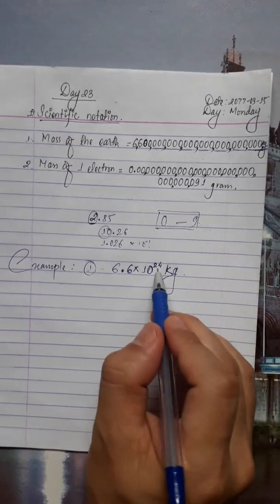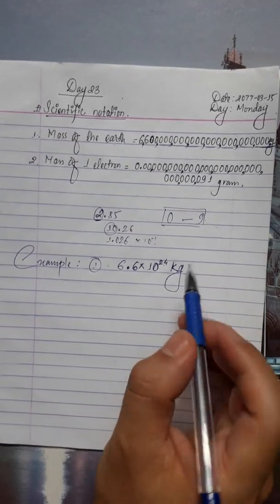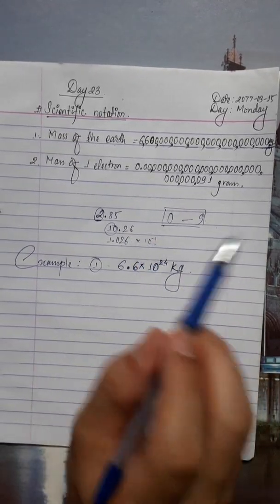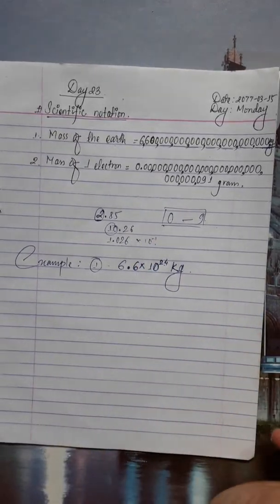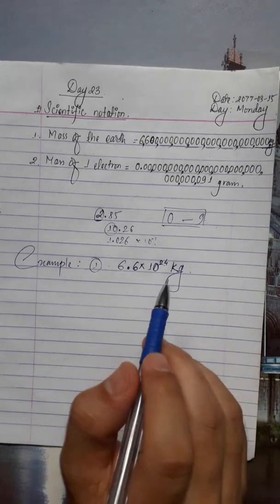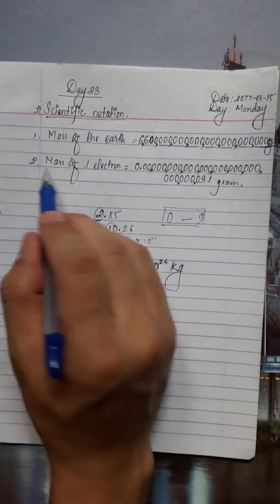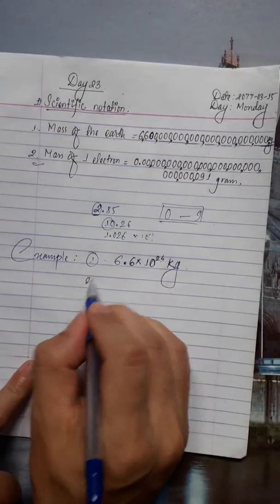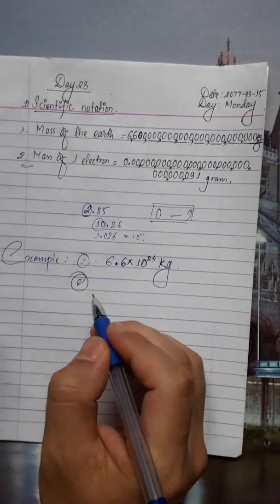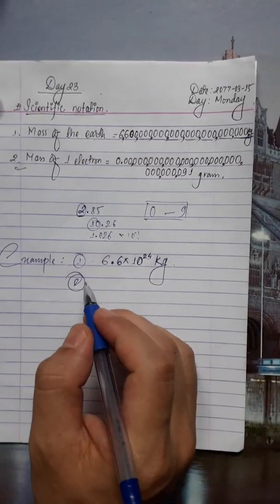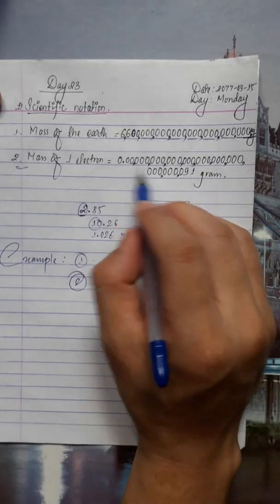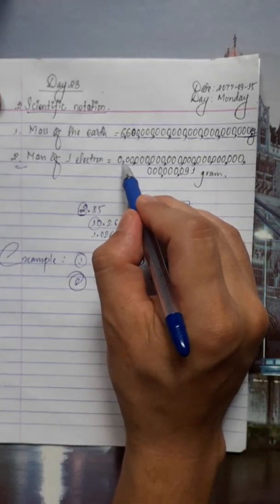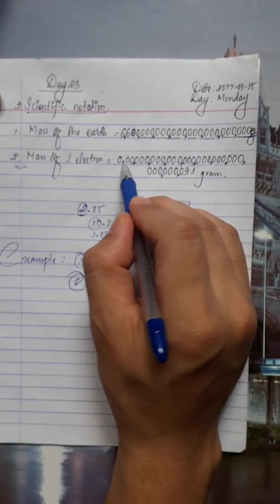When moving the decimal to the left, the power is positive. When moving to the right, the power is negative. Now for the mass of the electron, we need to move the decimal to the right — counting how many places.